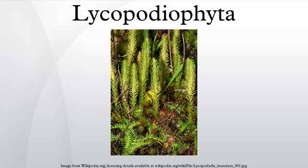Sporangia of living species are borne on the upper surfaces of microphylls. In some groups, these sporophylls are clustered into strobili. During the Carboniferous period, tree-like Lycopodiophyta formed huge forests that dominated the landscape.